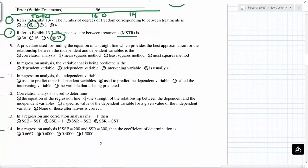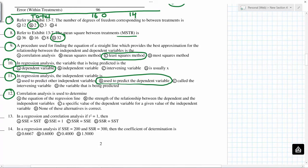A procedure used for finding equation of a straight line, which provides best approximation, so this is called least square method. In regression analysis, variable that is being predicted is the y variable or the dependent variable. Independent variable is used to predict the dependent variable. Correlation analysis is used to determine the strength of the relation between dependent and independent variable.